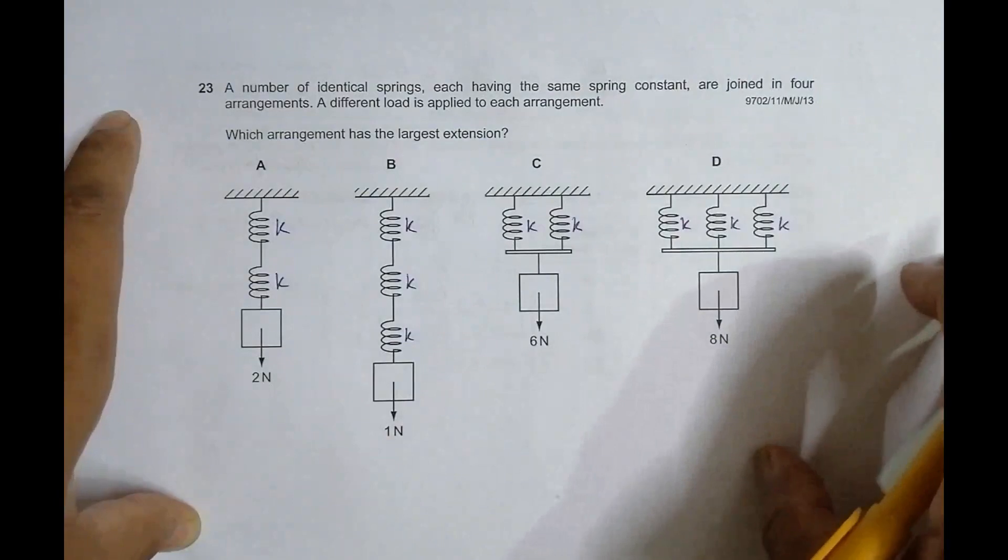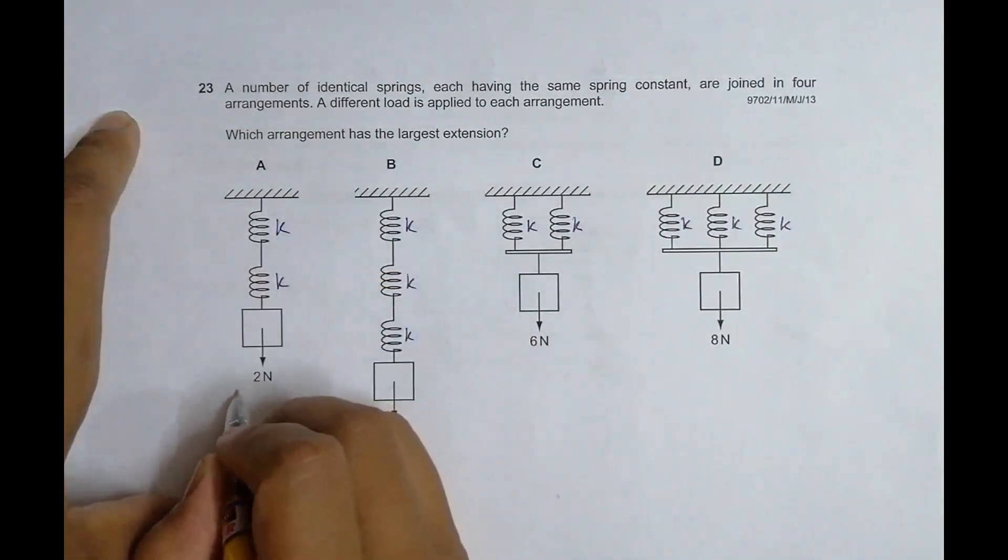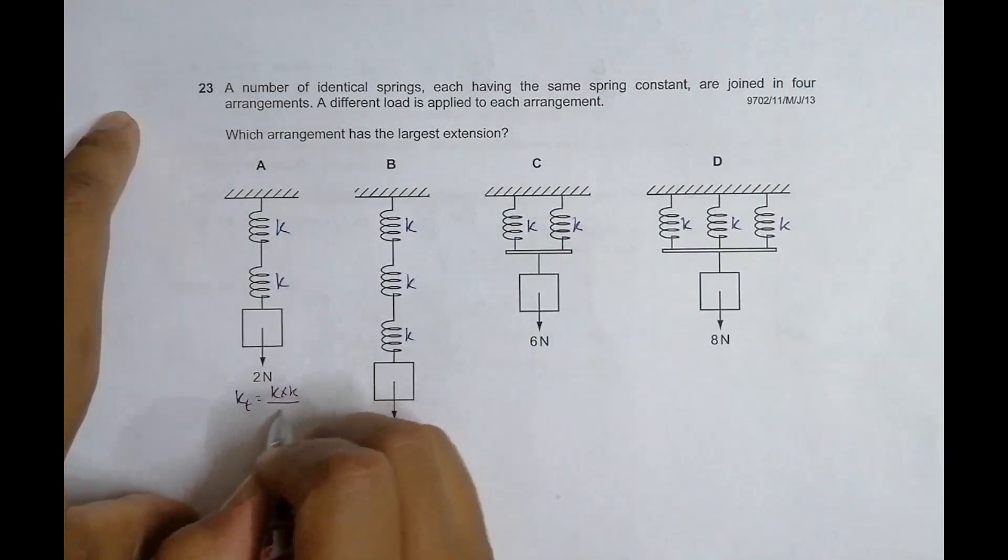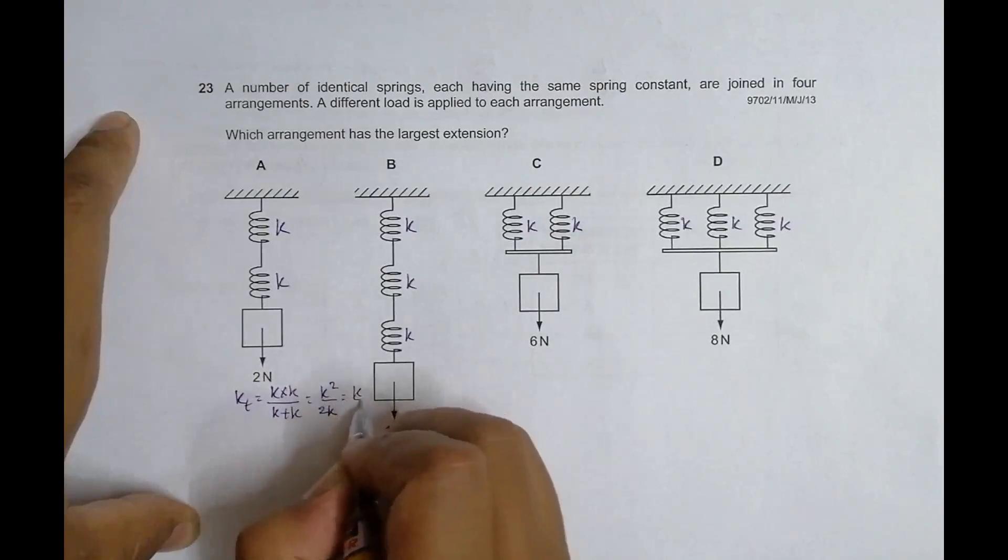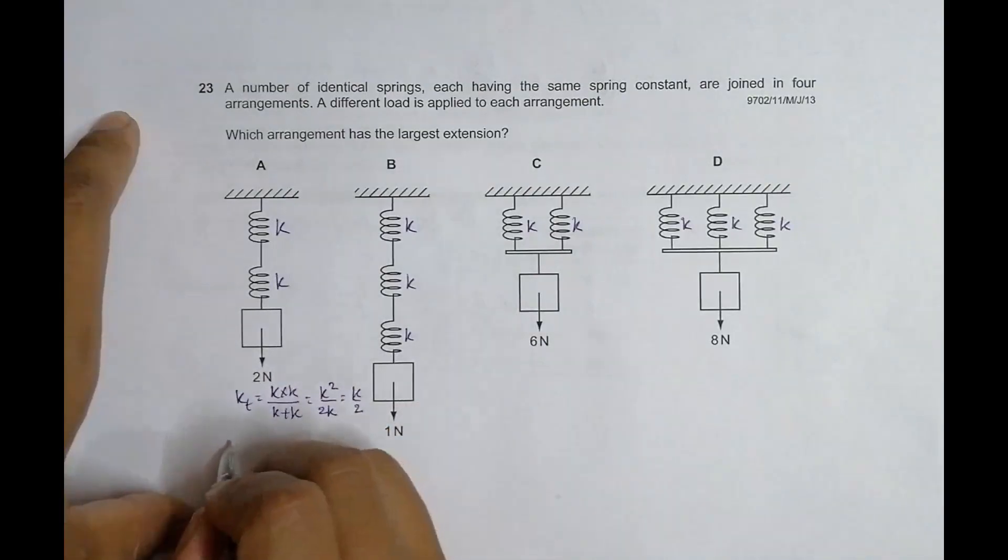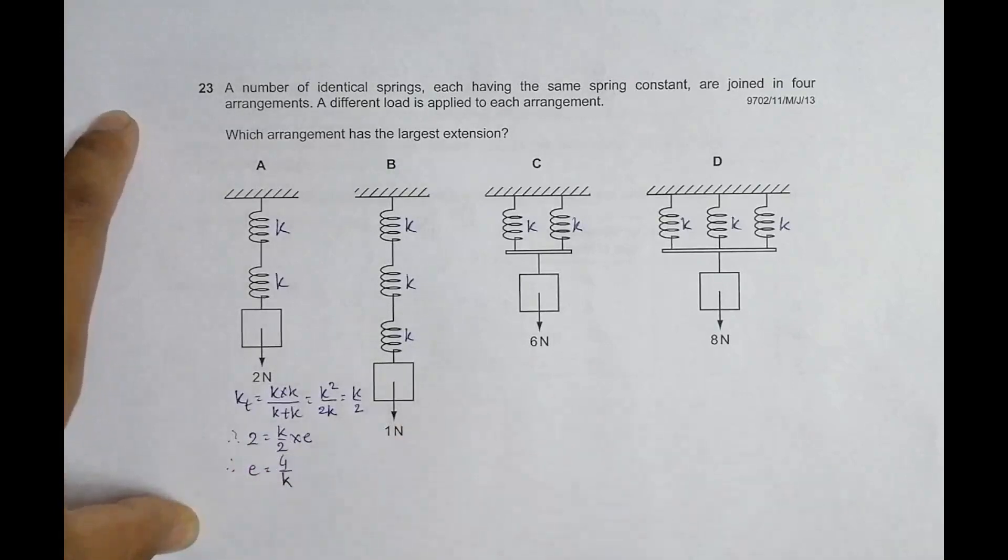Since K and K are in series, K total equals K times K divided by K plus K, which equals K squared by 2K, equal to K by 2. Therefore, force equals this K into extension. Force 2 equals spring constant into extension, so extension equals 4 by K.